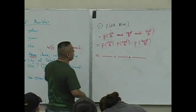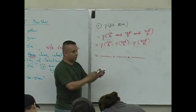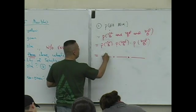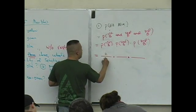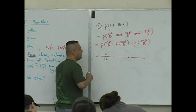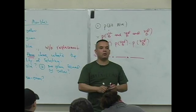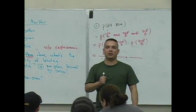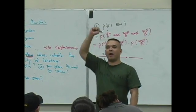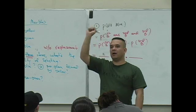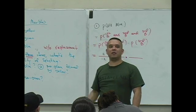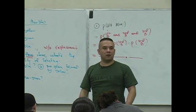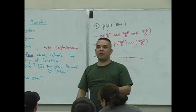You reach in the bag. What's the probability you select a blue marble? Two over twelve. So what do you do with that first marble that you selected that was blue? It's without replacement — out the window.